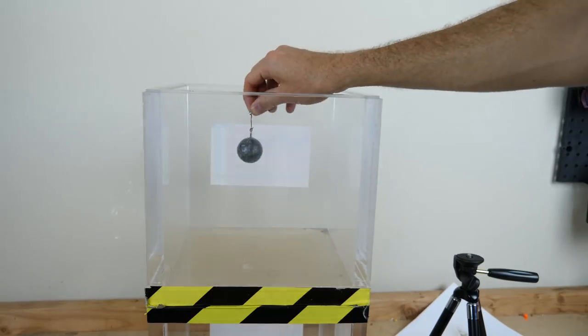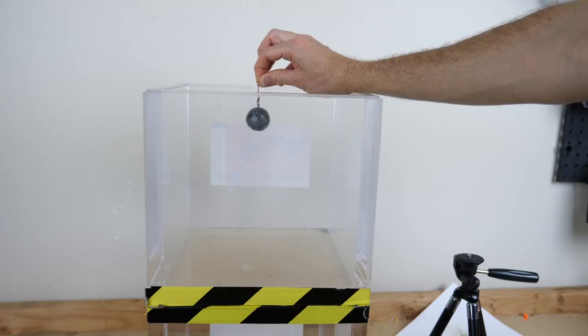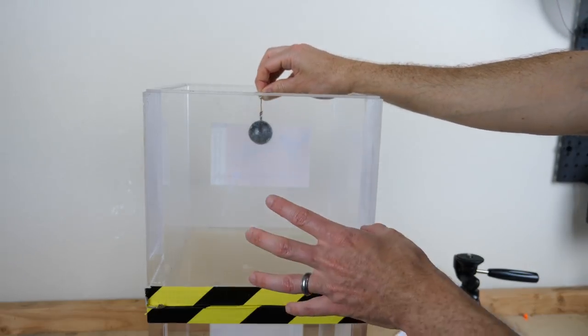So what I'm going to do is I'm going to put some silver fulminate in my vacuum chamber, and then I'm going to drop this lead ball on it and see if it actually explodes.